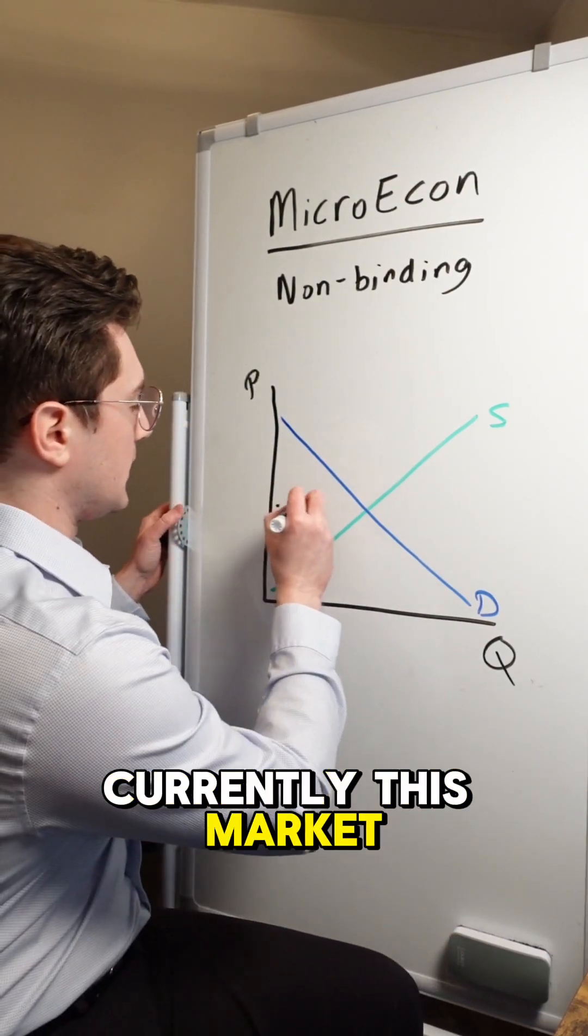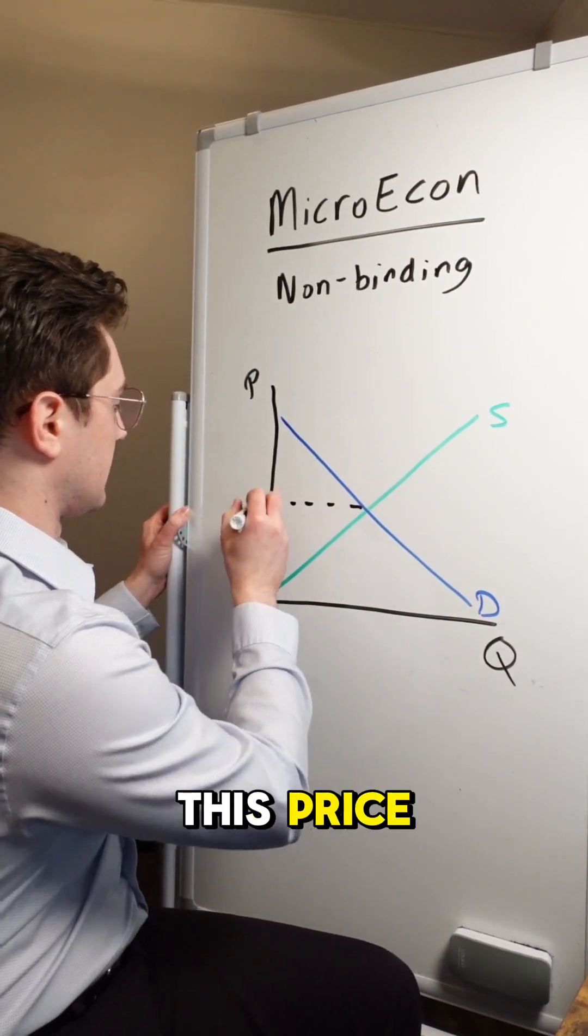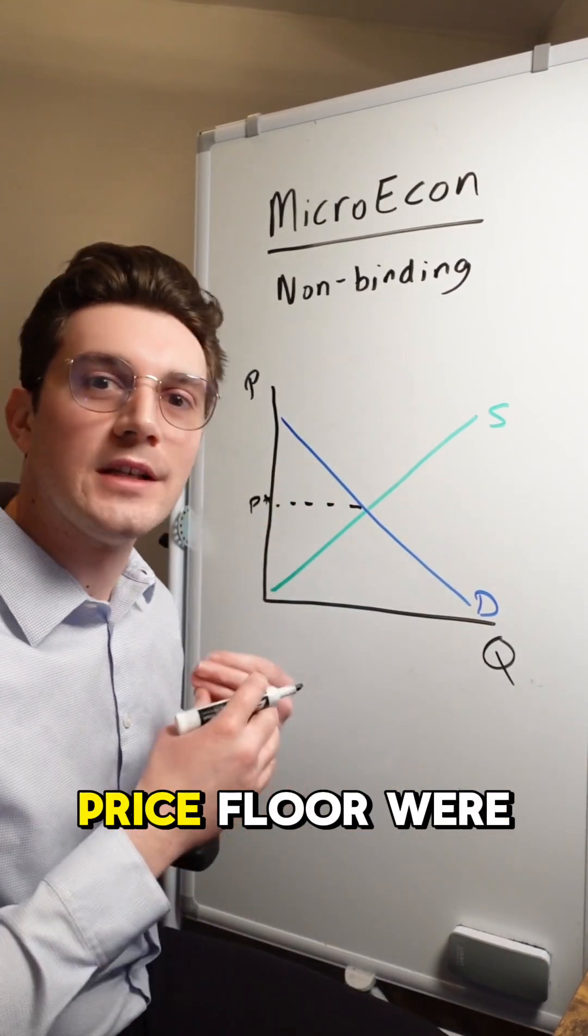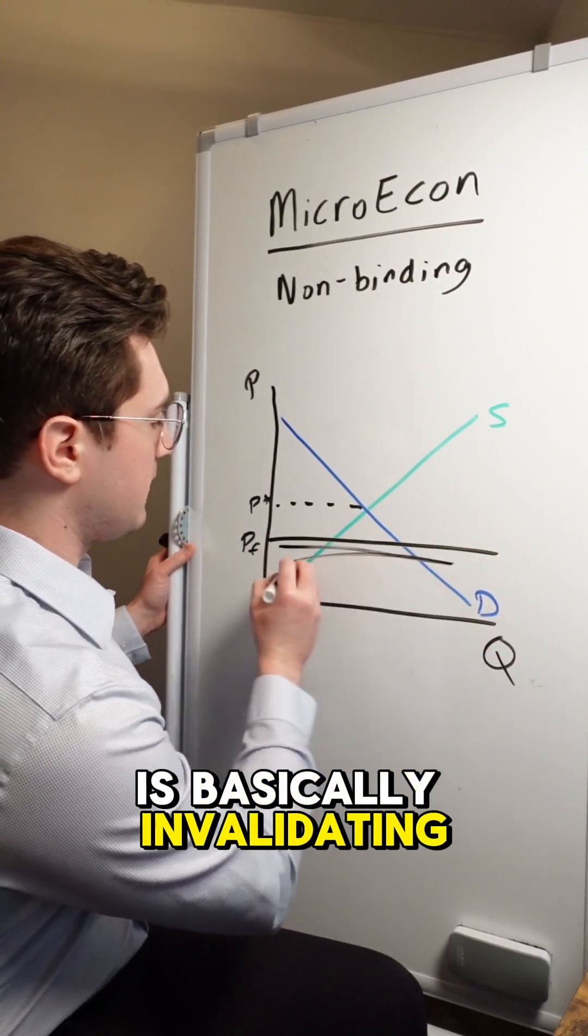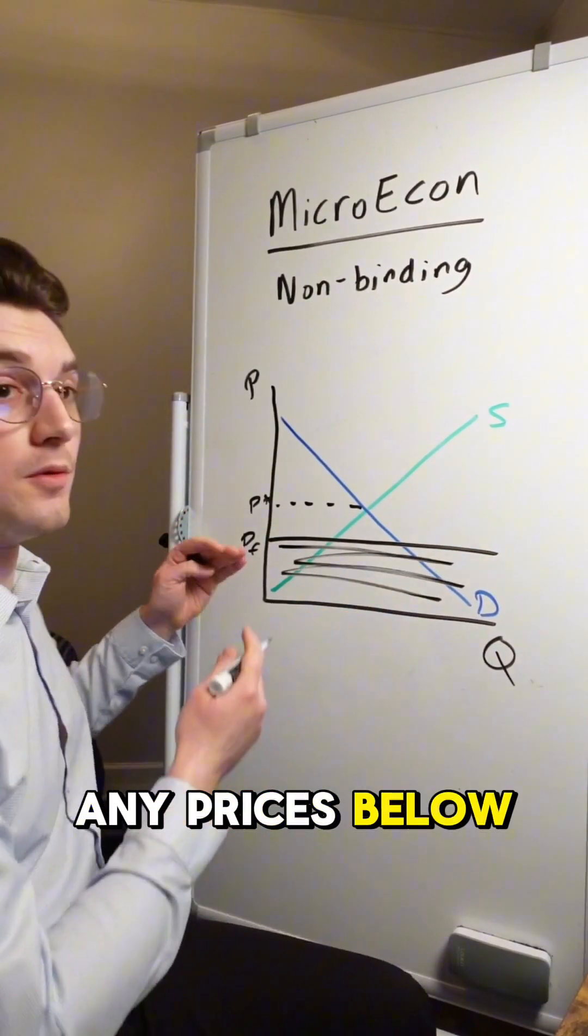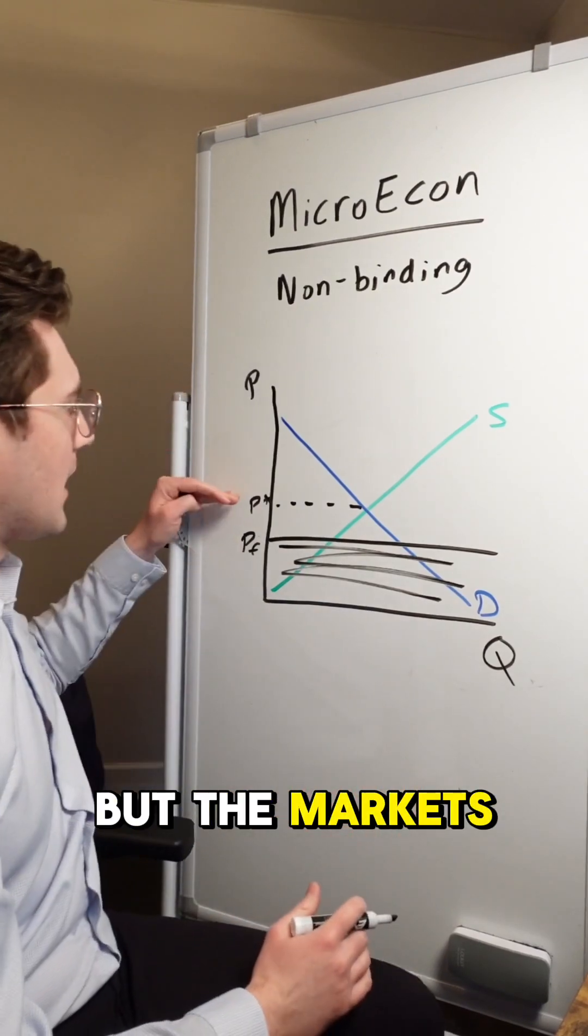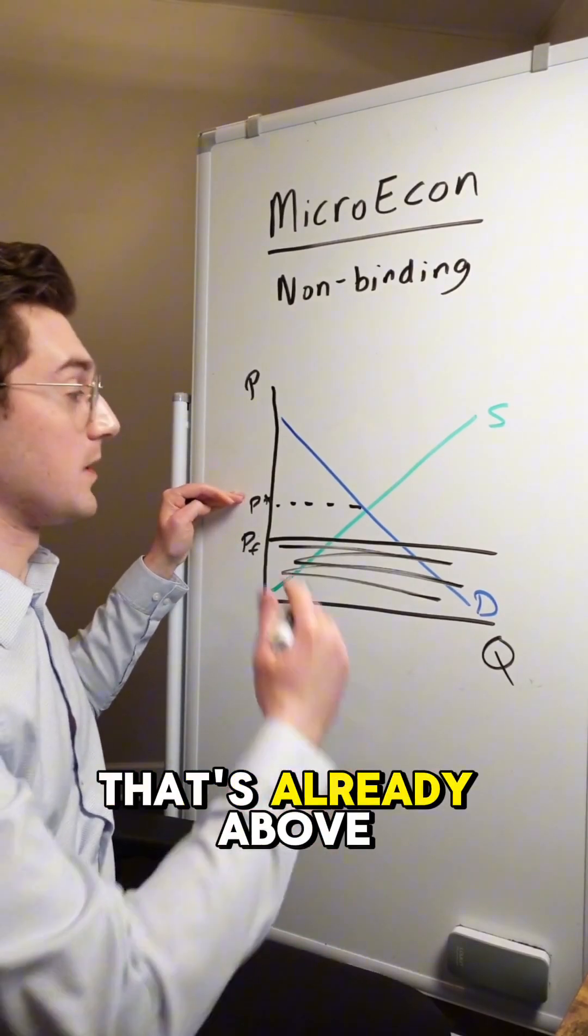Currently, this market is operating at this price. So what would happen if the price floor were set below this price? Well, remember, that price floor is basically invalidating any prices below its value. But the market's operating at this P star value that's already above the floor.